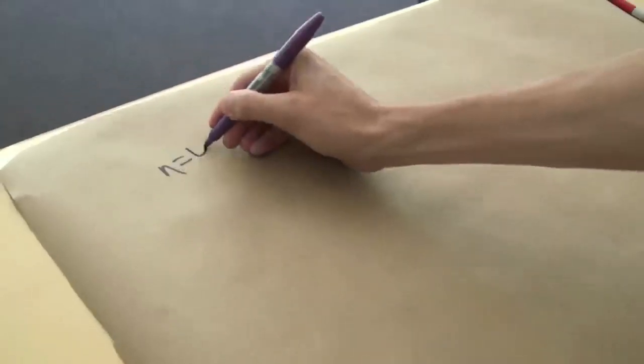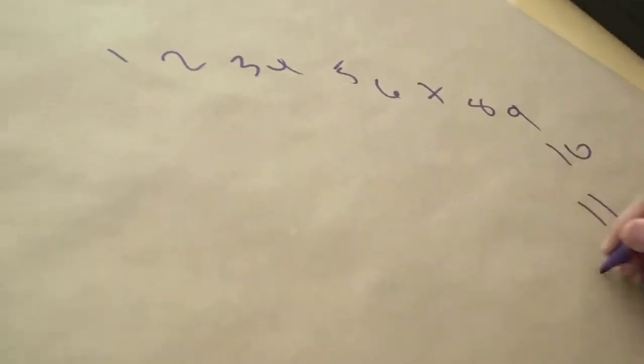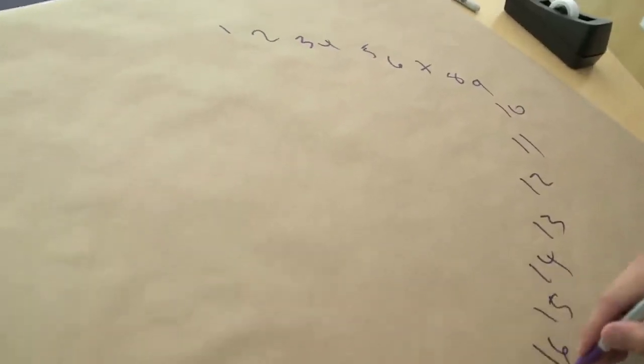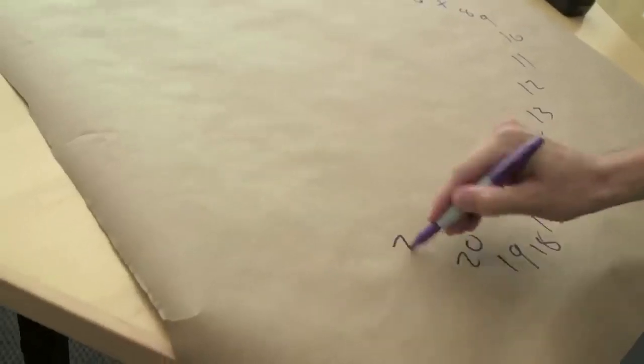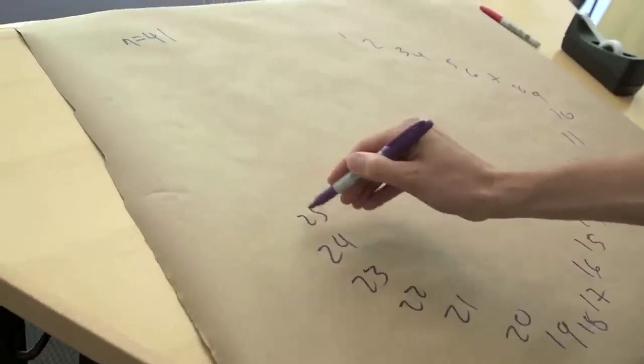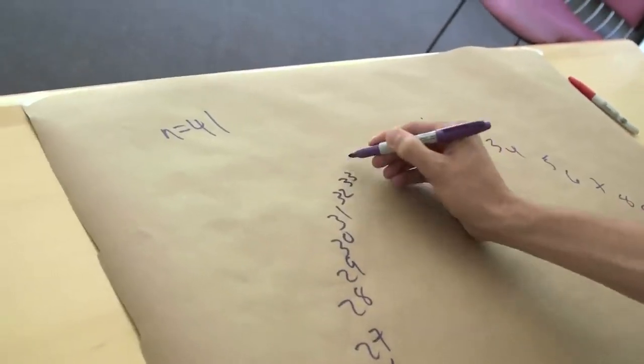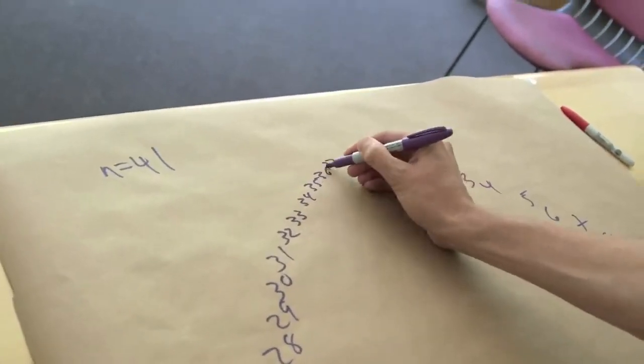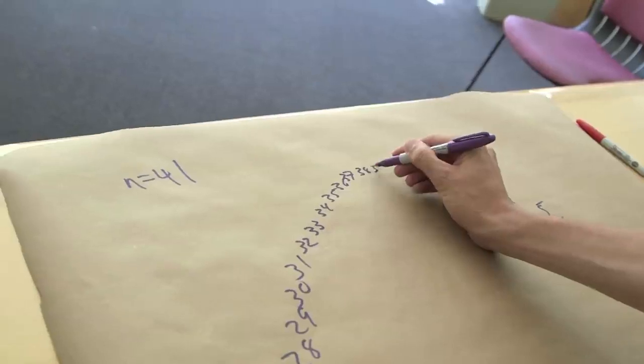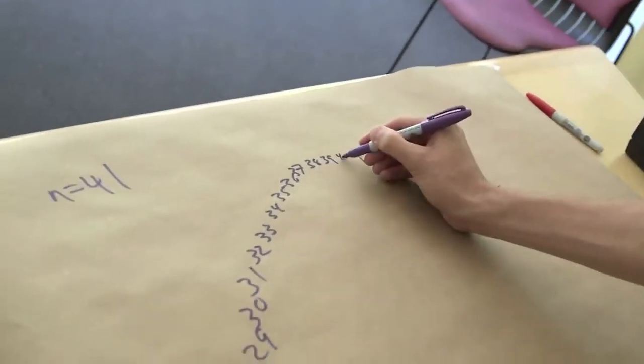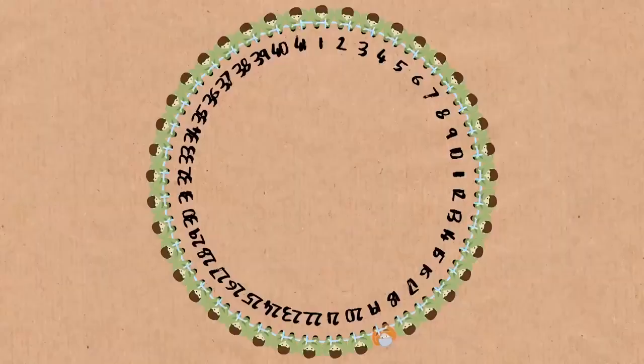So here we go. We're going to do n equals 41. Put them in the cave, waiting their fate. Not a very good circle. Should I redo this? No, you're okay. 40, 41. Okay. There we are. So we got a little tight at the end. This is a lesson about planning ahead, people. Okay. So let's do it.